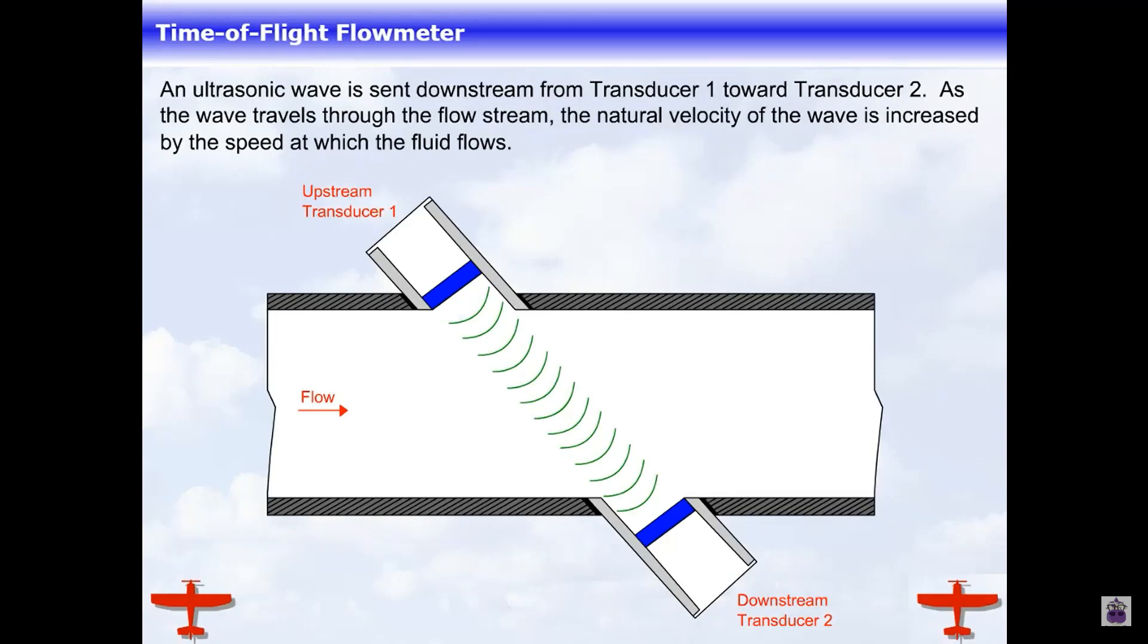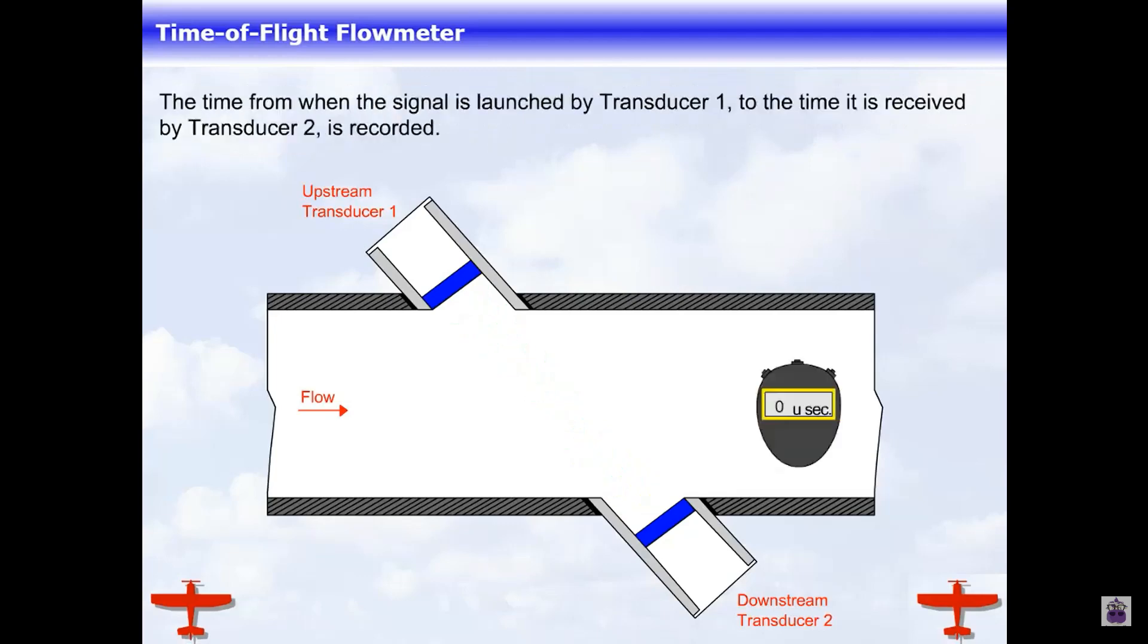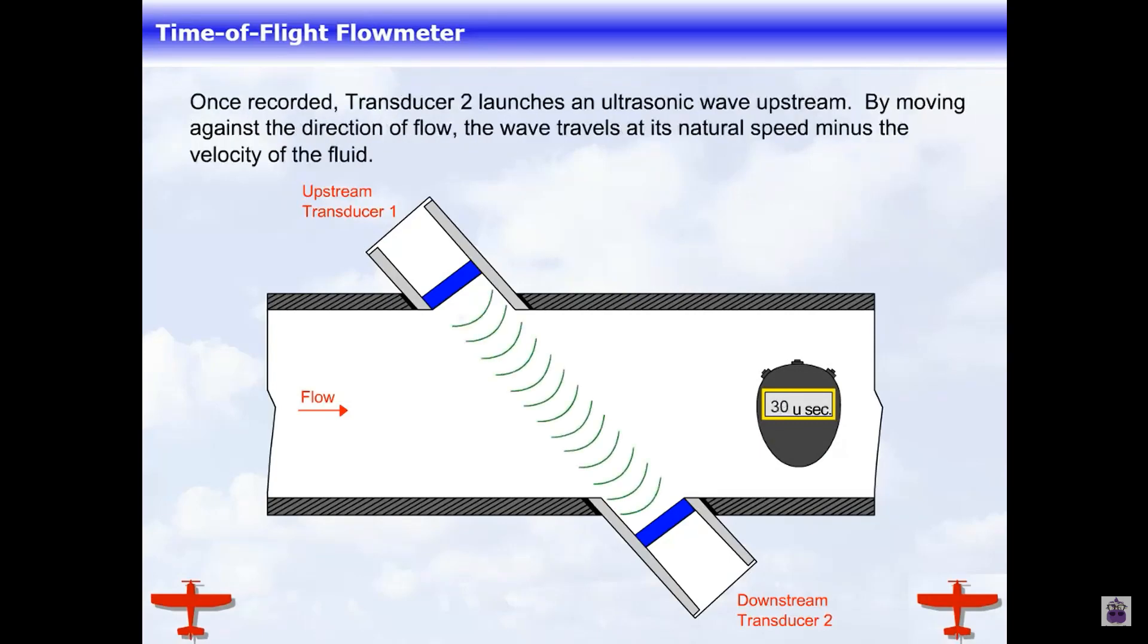the natural velocity of the wave is increased by the speed at which the fluid flows. The time from when the signal is launched by transducer 1 to the time it is received by transducer 2 is recorded.